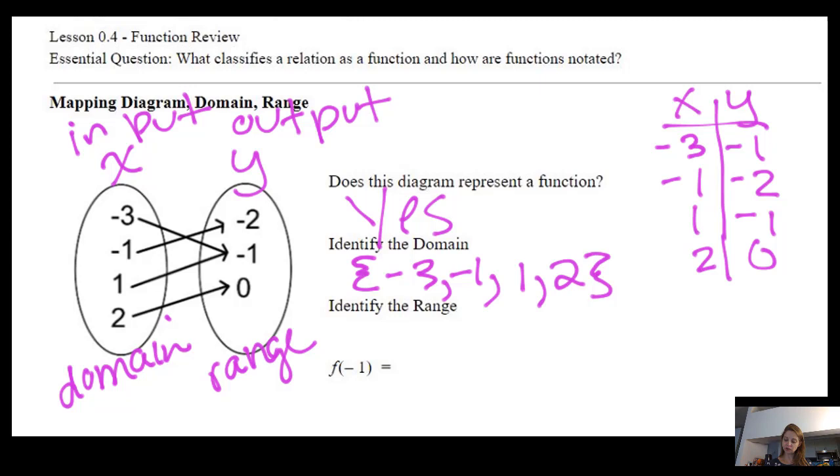For the range, there are three possible values: negative two, negative one, zero. See, I chose to put it from least to greatest. And now we've got a list of the range.